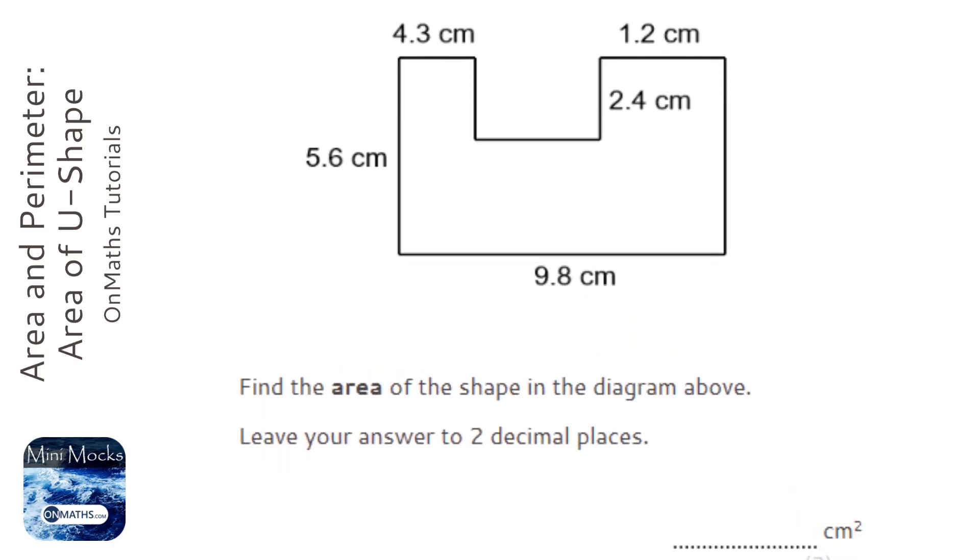We're asked to find the area of the shape above, and there are multiple ways of doing this. You can work out the big rectangle and take away the bit you don't want, or you can cut it up into three rectangles in two different ways.